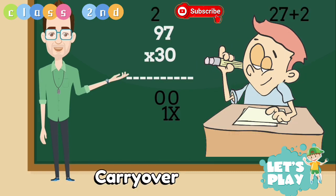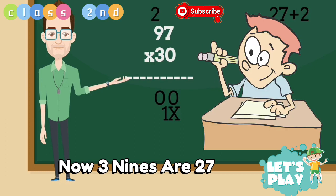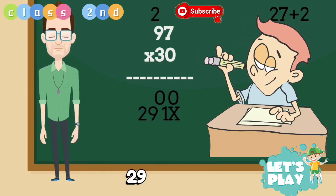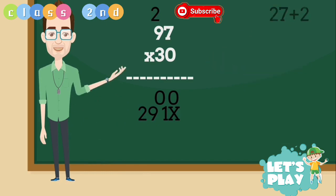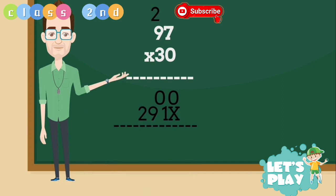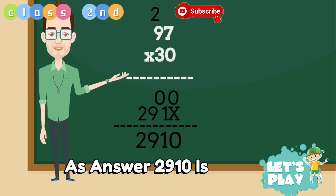1 down, 2 as carry over. Now 3 9's are 27 plus 2 from carry, 29. Ok now let's add. The first row is 0. So we'll write as answer 2910.